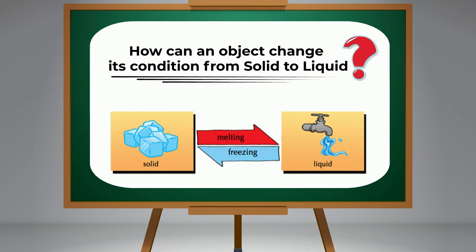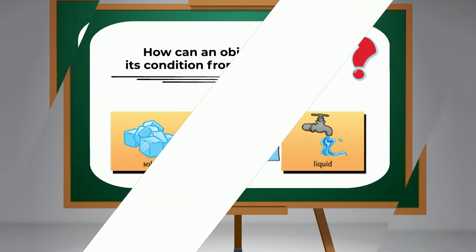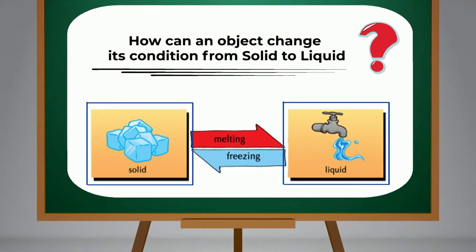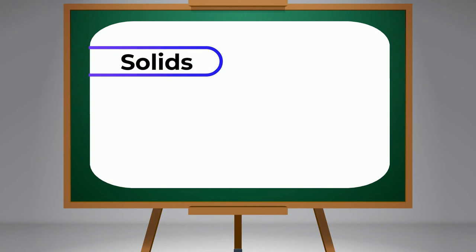Everything we see around has a shape. Some of them are of solid shape while others are of liquid shape.